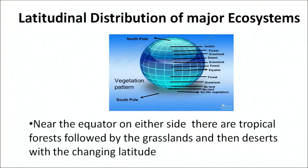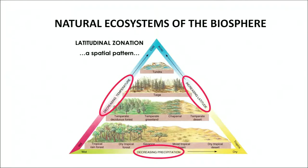Near the equator on either side, there are tropical forests, followed by the grasslands and then deserts, with changing latitude as you can see in this figure. Subsequently, there is a change from deserts to boreal forests at higher latitudes. Near the poles, it is the tundra biome that contains very limited fauna and flora due to harsh climatic conditions. In this figure, you can see the latitudinal and altitudinal variations dependent upon the physiography of the place, with respect to climatic changes, temperature, soil and other factors.